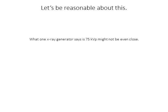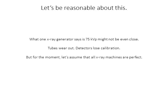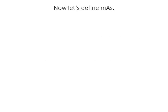What one generator says is 75 KVP might not be close in practice. Machines fall out of calibration, so these values are discussed conceptually. You might use 75 KVP in one center, go to the next center with the same exposure setting, and the KVP won't even be close. For the sake of this argument, we'll assume all x-ray machines are perfect.